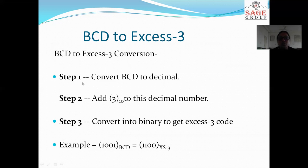So how to convert BCD to XS3? There are three steps for BCD to XS3 conversion. Step 1: Convert BCD to decimal number. Step 2: Add 3 to this decimal number. Step 3: Convert into binary to get XS3 code. These three steps are required for converting BCD to XS3 code. Let me take an example: 1001 in BCD, how to convert to XS3 code.